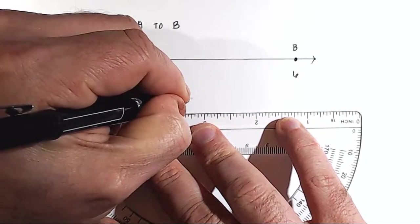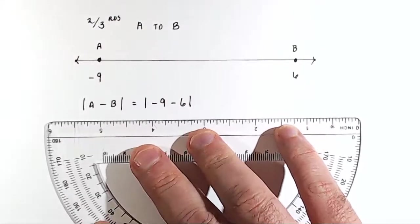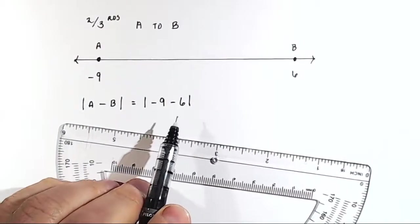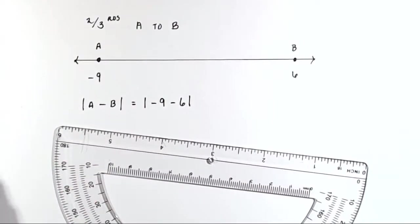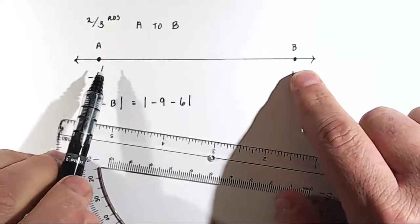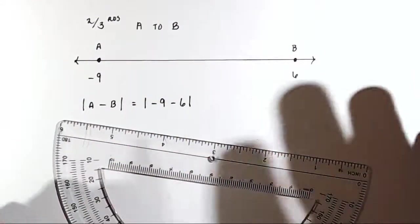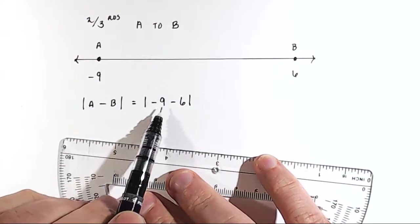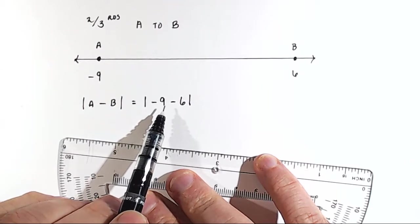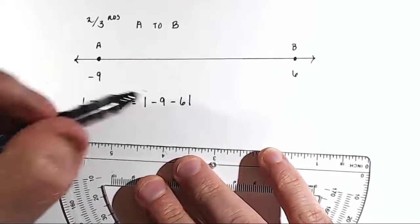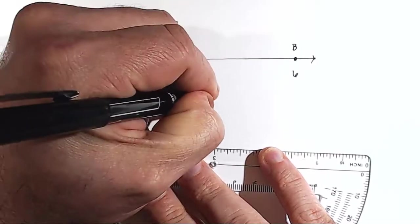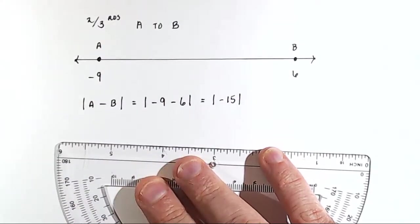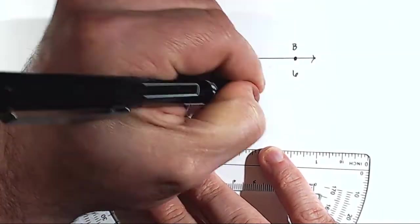And the reason we put these values, or this difference in absolute value brackets, is so that the answer we get is positive. Basically, you cannot travel a negative distance in physical space. So when we subtract 6 from 9, we get negative 15. So this would be equal to the absolute value of negative 15. Well, the absolute value of negative 15 is just 15.